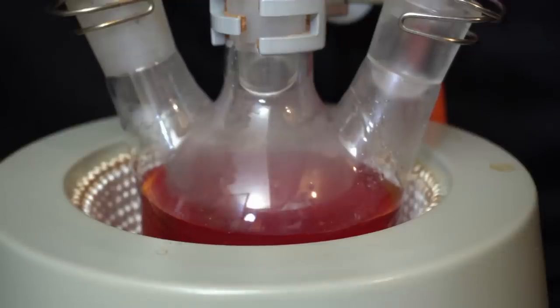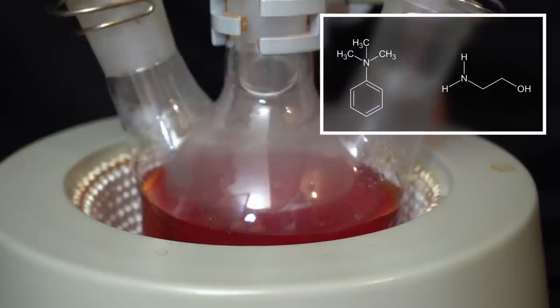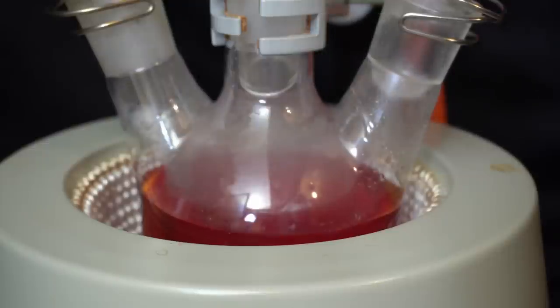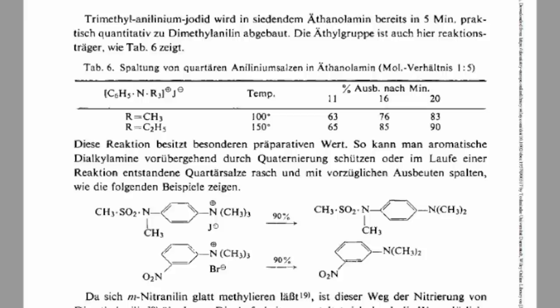The high temperature will cause one of the methyl groups from the trimethyl ammonium iodide to transfer to the ethanolamine and form the desired dimethylaniline. According to the paper this transition should be completed after 5 minutes at reflux.